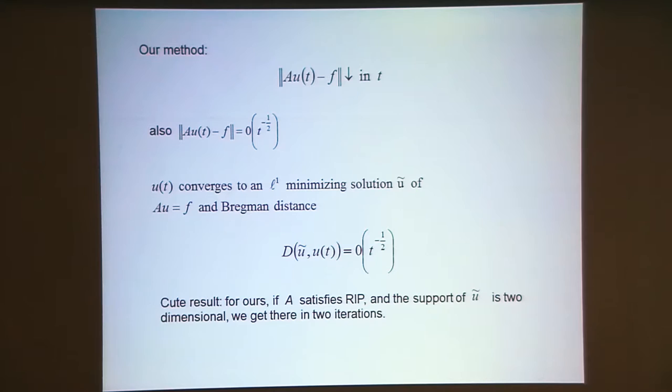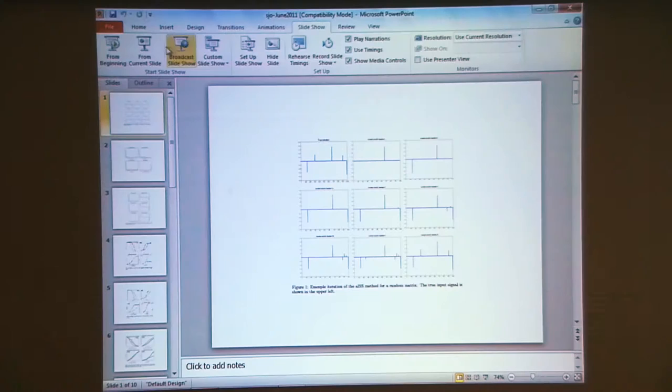Our method has the property that Au(t) monotonically approaches f and the error is O(1/√t). You converge to an L1 minimizing solution. The Bregman distance is O(t^(-1/2)). When does L1 really imply L0? The theorem of Terry and Emanuel says the RIP property. Our stuff here always gives you the L1 minimum. But it turns out that if A satisfies RIP, we'll get the L0 minimum too. If the support of u is two-dimensional, we get there in two iterations.